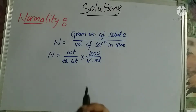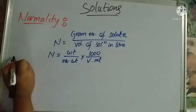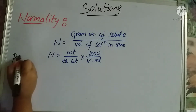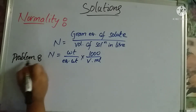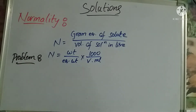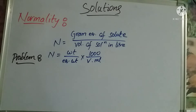Now let's discuss a problem. 4 grams of NaOH is dissolved in 500 mL of its aqueous solution. Find the normality of the solution. This is our first problem.